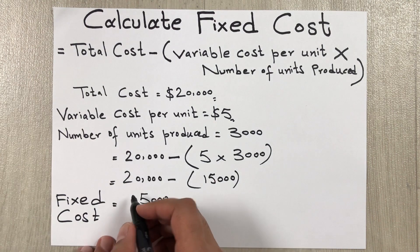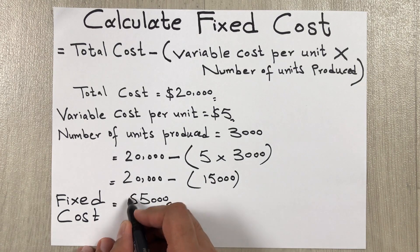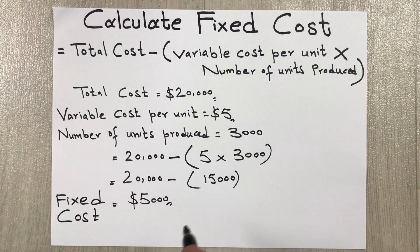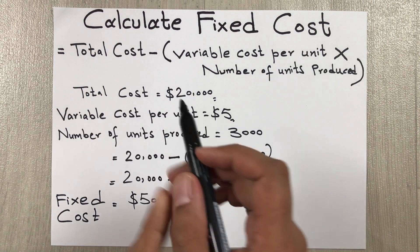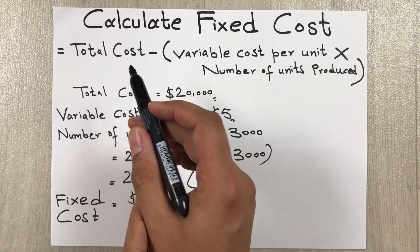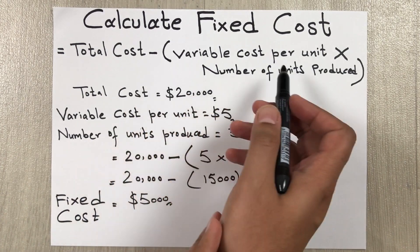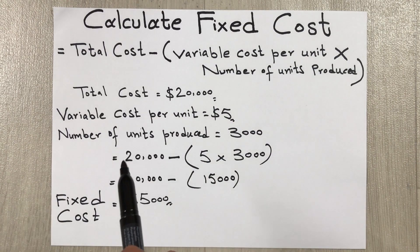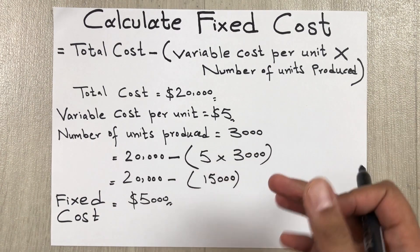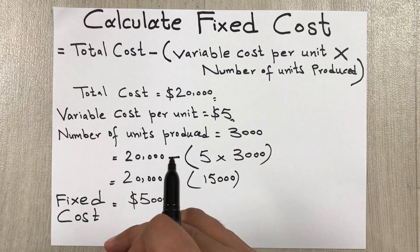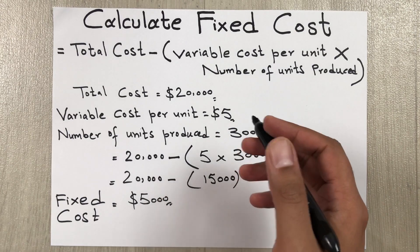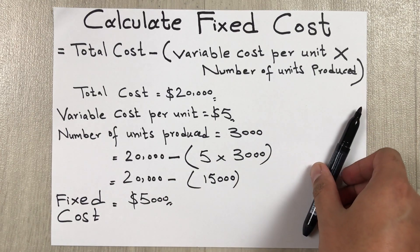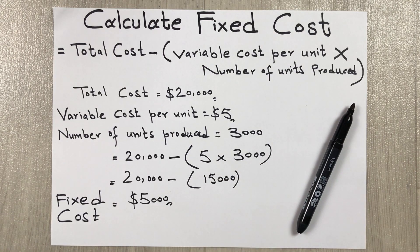Fixed cost is five thousand dollars. This is how you calculate fixed cost — just use the formula: total cost minus variable cost per unit multiplied by number of units produced, then put the values in and you get your answer. I hope you liked and enjoyed the video. Please subscribe to my channel, thank you very much.